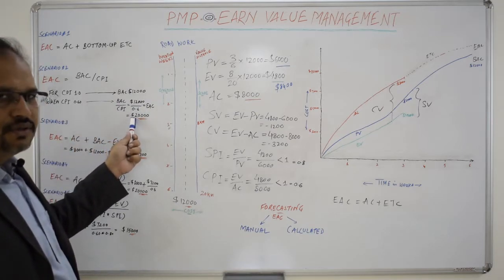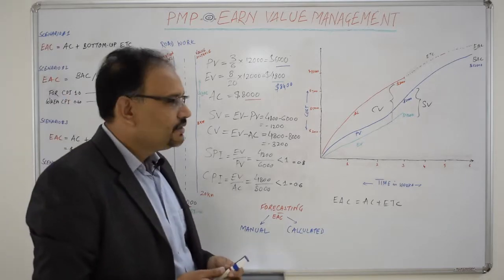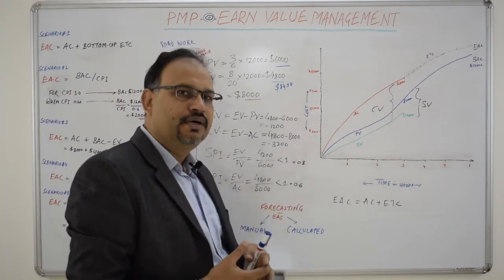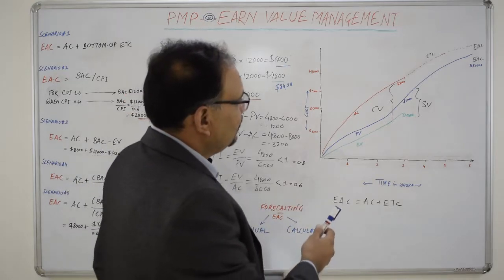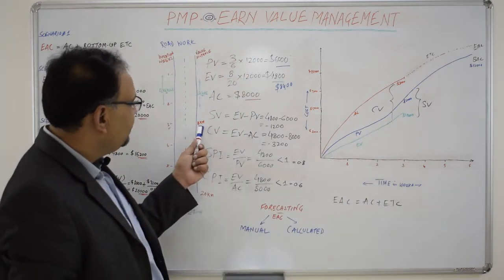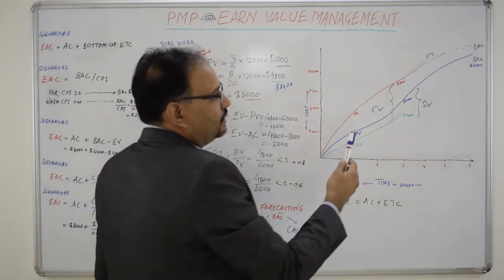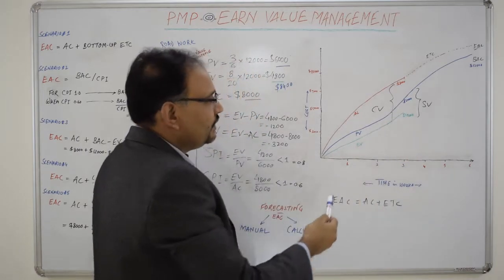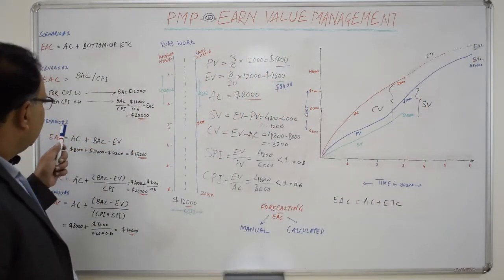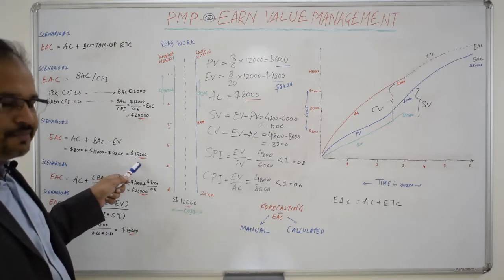But that didn't happen — the CPI fell down to 0.6. So the BAC is divided by CPI: $12,000 divided by 0.6, which comes out to be $20,000 for this scenario. In Scenario Number Three, the project manager understands that the cost overrun was because of some issues, and those issues have now been addressed. For the remaining work, the project can continue with the budgeted cost. But the reality is that the Earned Value is only $4,800 — meaning the project has only built 8 km of road, and the remaining 12 km still has to be built. In that case, the difference of BAC and EV is added to the AC, giving the formula: EAC = AC + BAC − EV, and the value comes out to be $15,200.